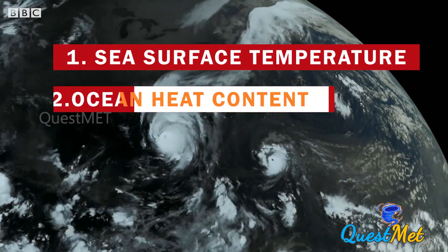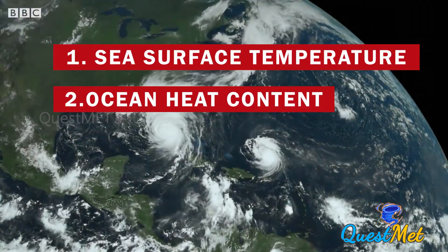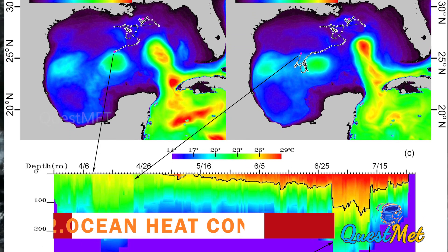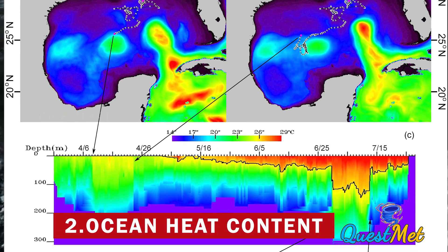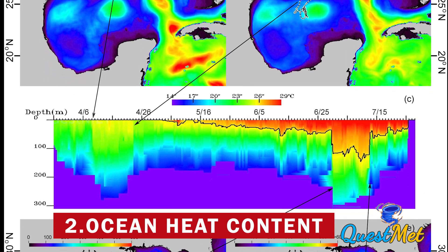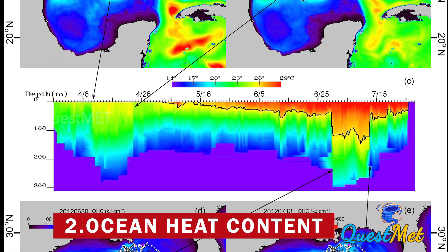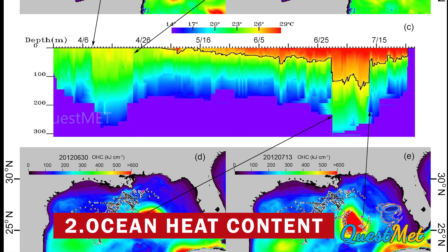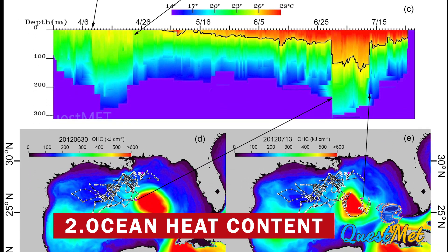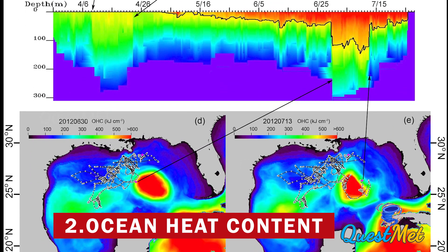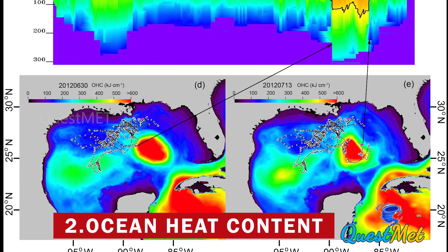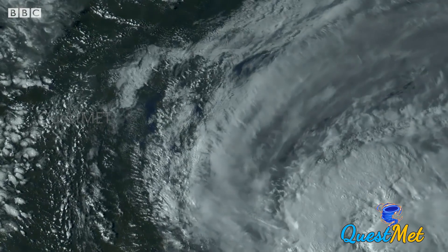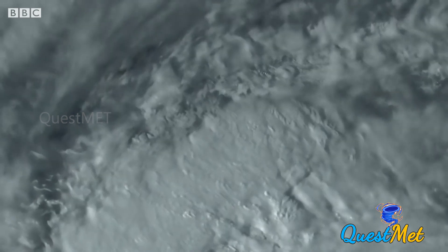The second index is ocean heat content, defined as the thermal energy present in the top 1000 meters of the ocean. It is usually denoted in kJ per cm² and a value of around 100 kJ per cm² is highly favorable for cyclone formation.